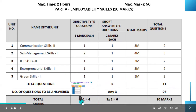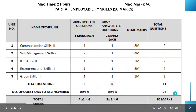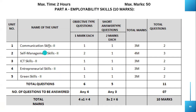Each short answer question carries 2 marks — 3 into 2 equals 6 — and total marks is 10. If you are clever, children, you can concentrate on only a few chapters. If you are perfect with Communication Skills, Self Management Skills, and ICT Skills, that's 4 plus 3 equals 7, plus 3 equals 10 marks. No need to worry about Entrepreneur Skills and Green Skills.